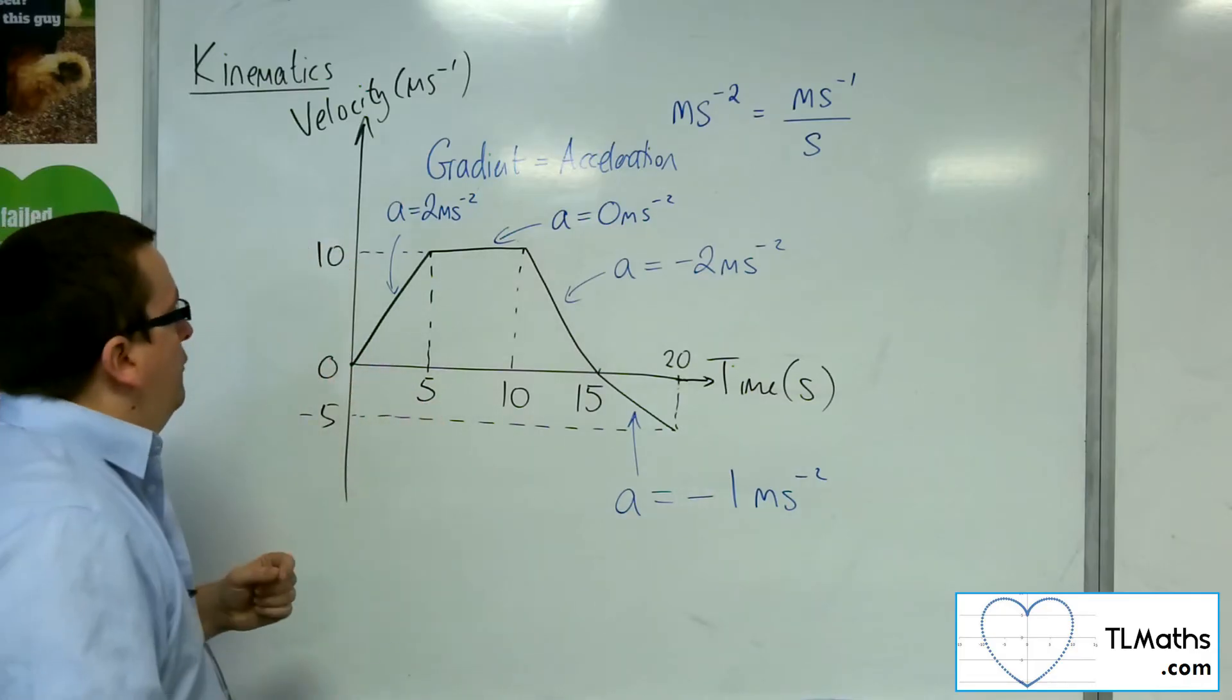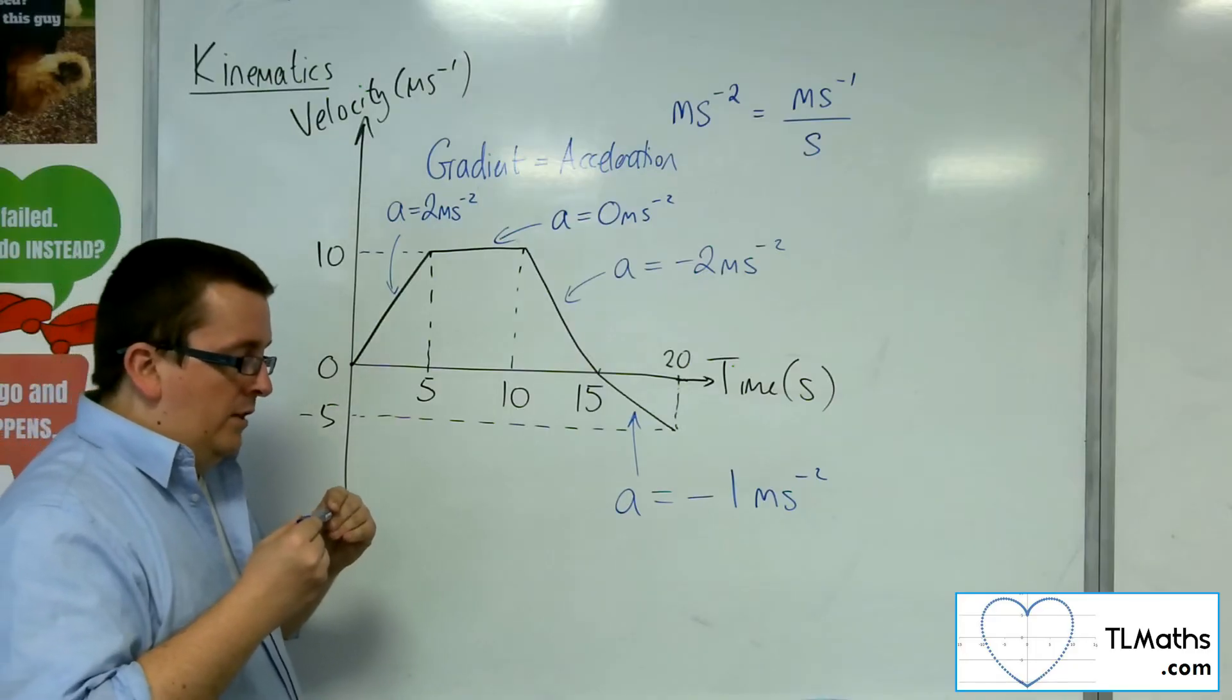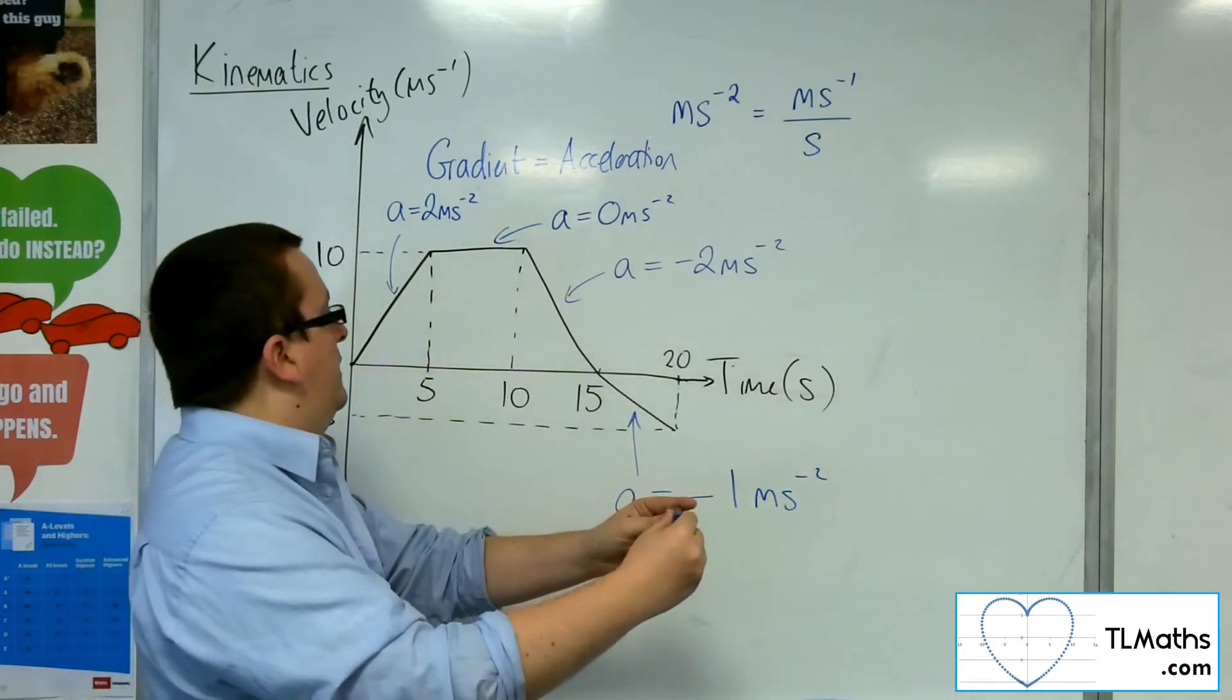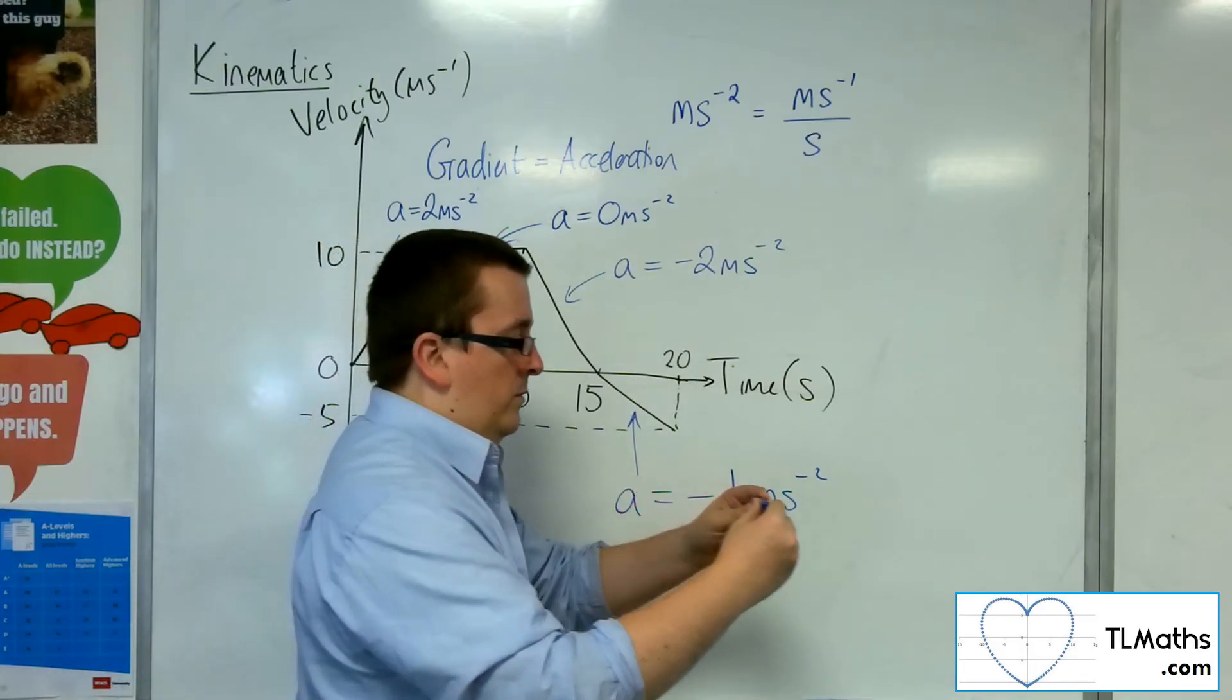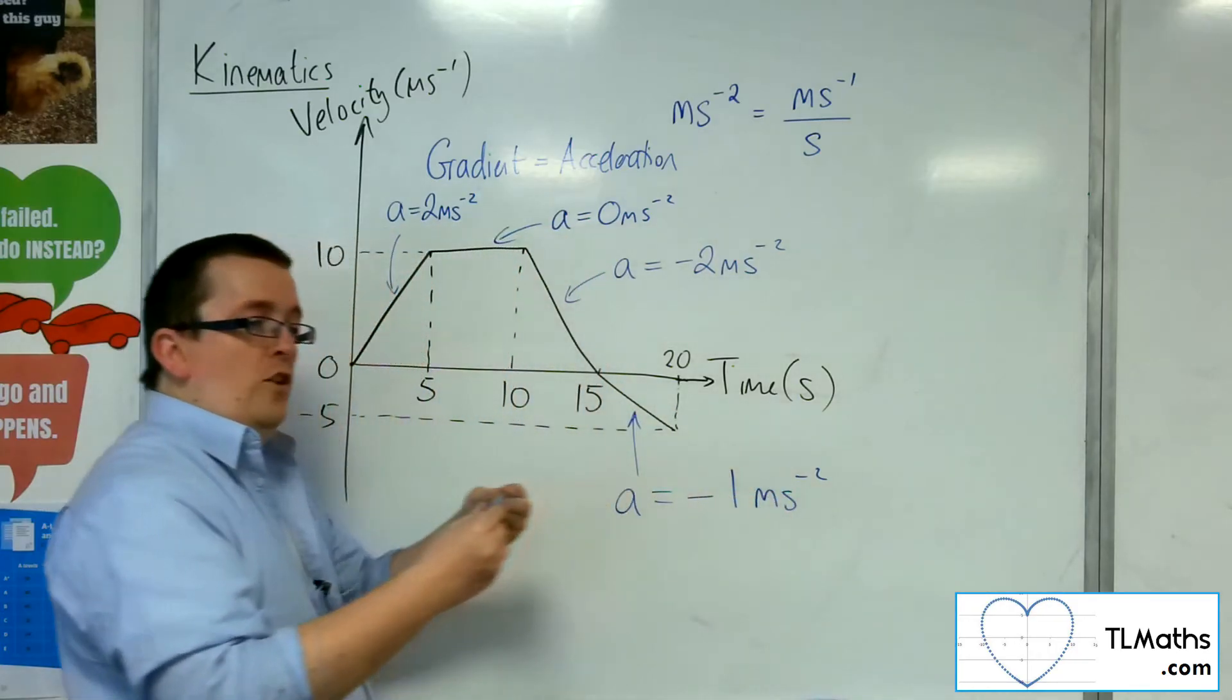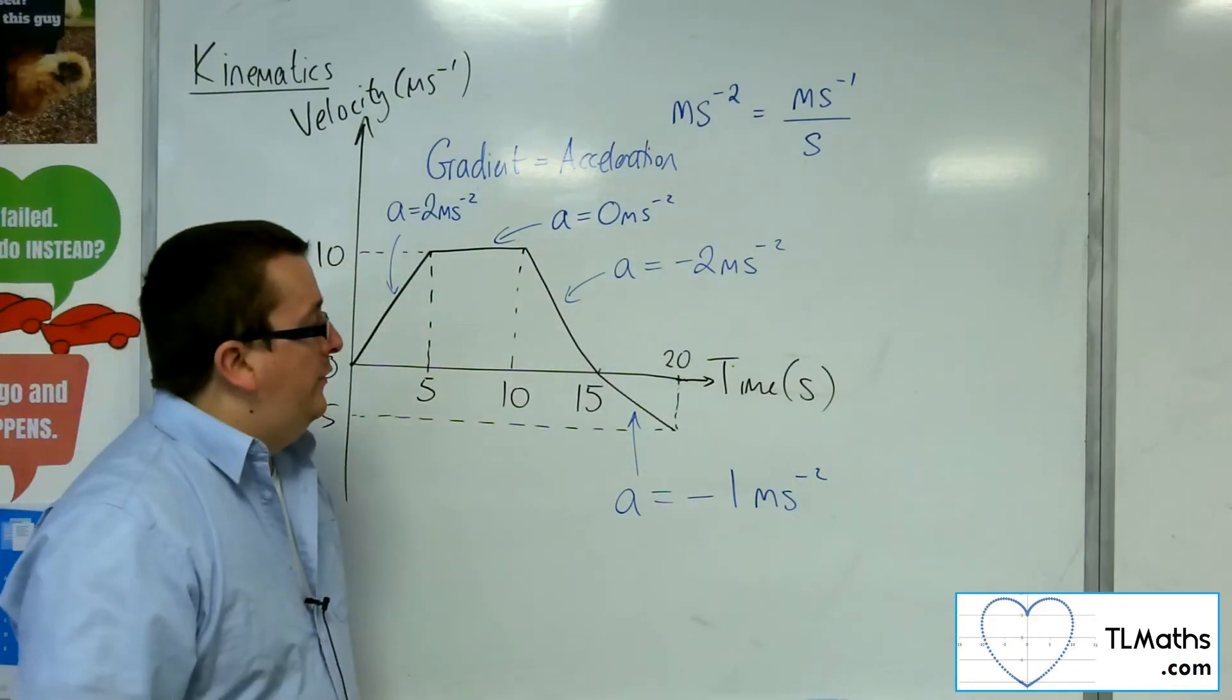So you've got this particle that is starting at rest. First five seconds, it is slowly increasing, and then it speeds up, and then hits a certain speed. It then goes on for that speed for the next five seconds. It then starts to decelerate, so decelerate down to 0. And then at this point, it starts to accelerate again, but going in the opposite direction. So that's what's going on. And we can talk about the gradient using that.